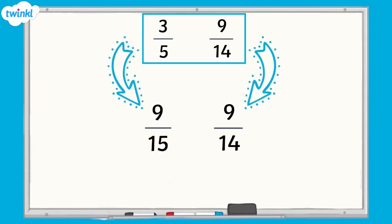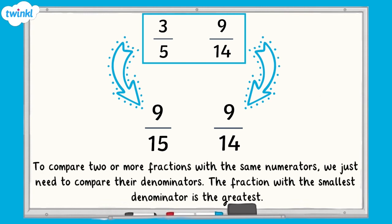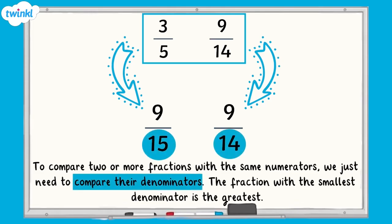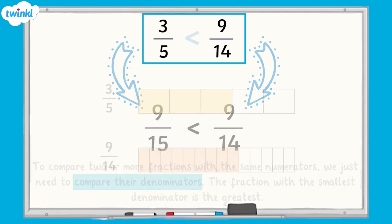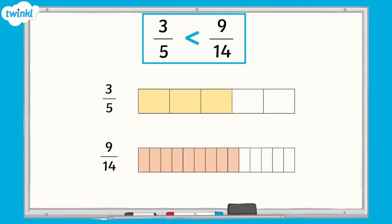Now both fractions have the same numerator, we can easily compare them. Remember this rule: to compare two or more fractions with the same numerators, we just need to compare their denominators. The fraction with the smallest denominator is the greatest. Therefore, 9 fifteenths is less than 9 fourteenths. As 9 fifteenths is equivalent to 3 fifths, we can also say that 3 fifths is less than 9 fourteenths.